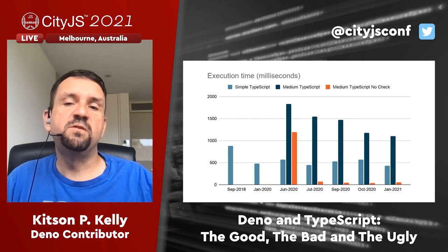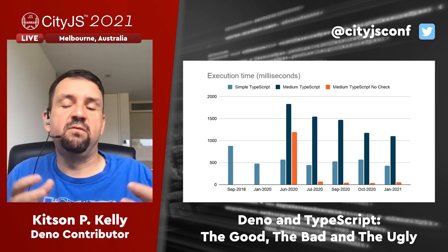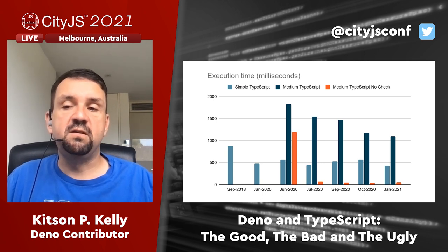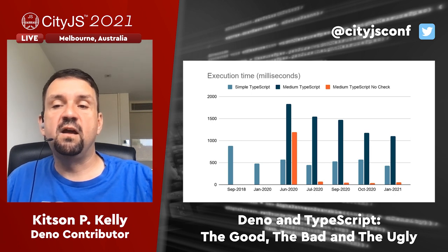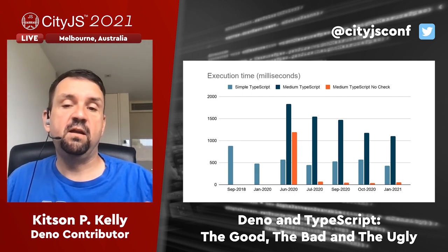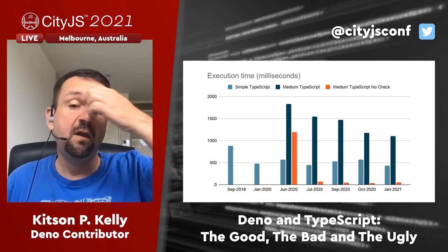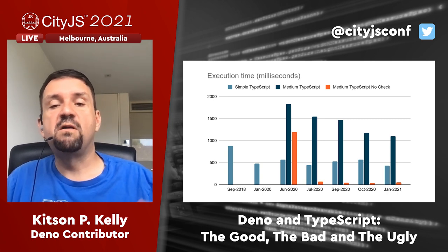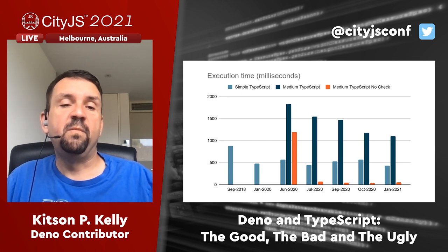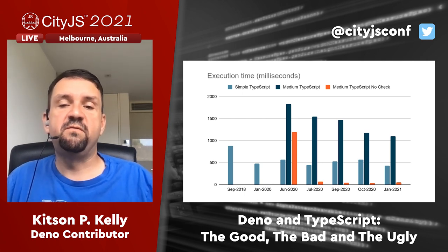We realized that type-checking was part of the problem and that in many cases end users didn't necessarily need their TypeScript type-checked every time — especially if an IDE was providing intellisense as they typed. So we introduced the --no-check option into Deno. Initially we simply told the TypeScript compiler to skip type-checking but still do parsing and emitting. Then we introduced SWC, a parser and emitter written entirely in Rust, and integrated it into the --no-check option. The results in July 2020 showed serious speed improvements when skipping type-checking.